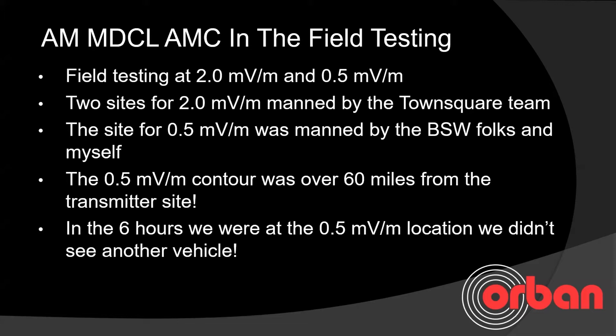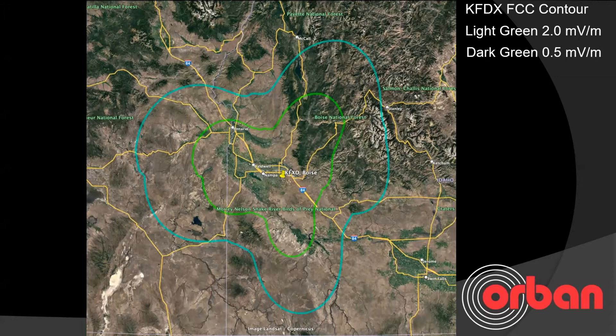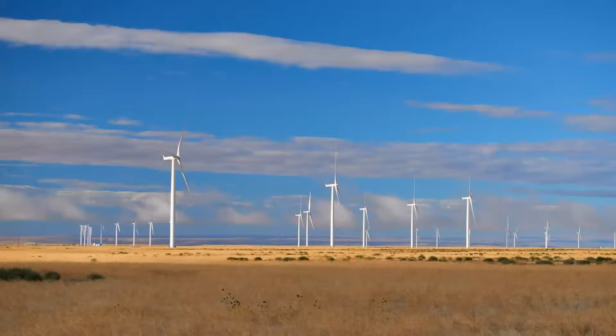The FCC contour plots show the light green as the 2 mV/m contour and the dark green as the 0.5 mV/m contour off the FCC files. That's a picture of the location where we were for 0.5 mV/m — out in the middle of absolutely nowhere on a gravel road.